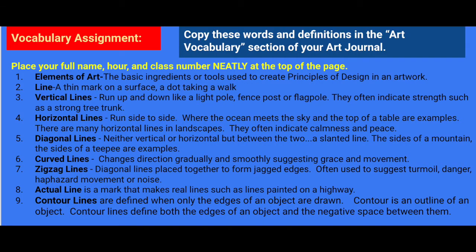We talked about line being one of the elements of art. We talked about vertical lines running up and down, horizontal lines running side to side, diagonal lines being slanted lines that are not vertical or horizontal. We talked about curved lines. Straight lines are something everybody just assumes. If you need to make a straight line, you don't have to worry about using a ruler — use something to make that straight line. Curved lines can show movement. Zigzag lines can portray anger or something negative like sharp teeth, danger, or lightning.